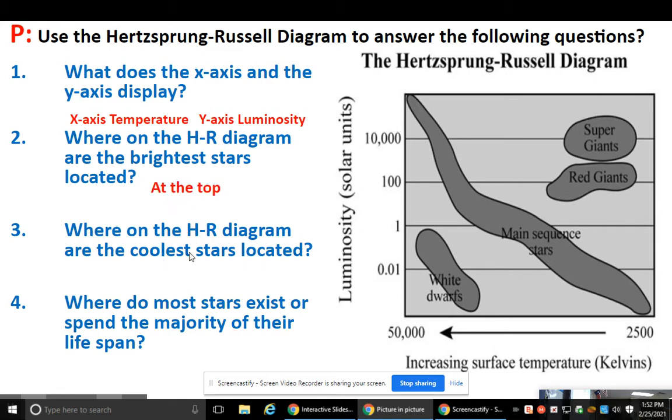Where on the HR diagram are the coolest stars located? So your coolest stars would be with lower temperatures. So your lower temperatures are to the right of the HR diagram. This would be all this area here. Where do most stars exist or spend the majority of their life's span? So here you can see the main sequence stars spend the majority of their life in these groups and they run diagonally from the top all the way to the bottom. Our sun is a main sequence star with a brightness of about a one.